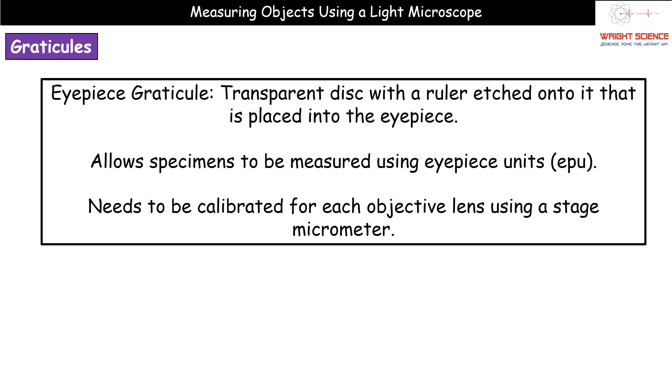First thing then, we need to understand what those two things actually are. First one, the eyepiece graticule. Quite simply your eyepiece graticule is a little circular transparent disc that's got a ruler etched onto the surface of it.